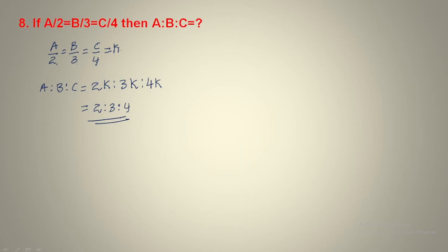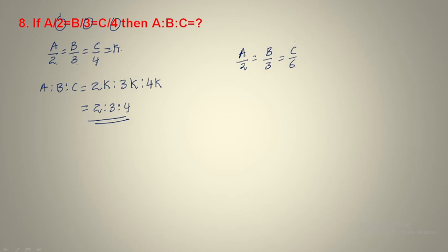So the exam tip is: in every exam question of this type, the denominator values directly give the ratio. For example, a word problem: 3000 should be divided among 3 persons a, b, c such that half of a's share, one-third of b's share, and one-sixth of c's share are equal. To find a:b:c, the denominators are 2, 3, and 6, so directly a:b:c = 2 is to 3 is to 6.